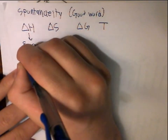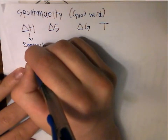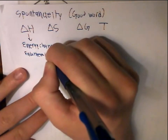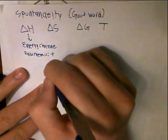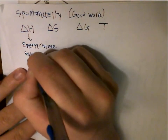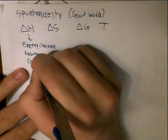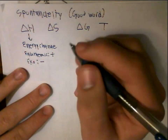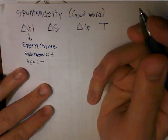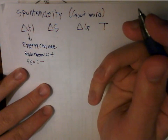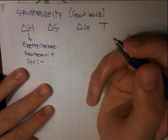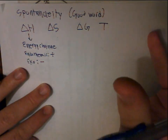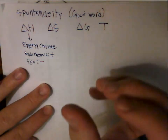If a reaction is endothermic, then delta H is positive. If it's exothermic, then delta H is negative, which makes sense. Delta H tells you how energy is gained or lost throughout a reaction — exothermic means energy goes out, endothermic means energy is absorbed.